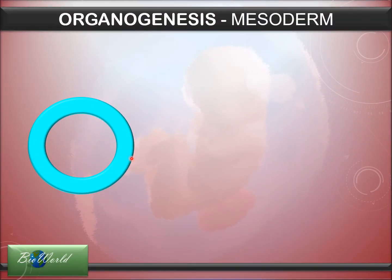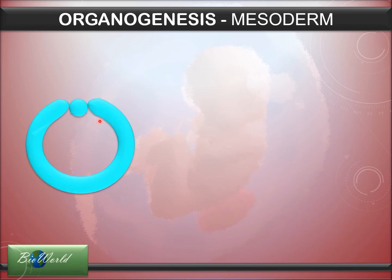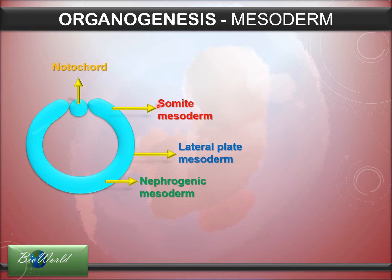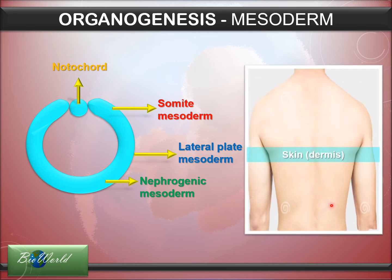The mesoderm is the middle layer of the gastrula, responsible for the development of the internal systems of our body. The mesoderm transforms into four specific regions: the notochord, somite mesoderm, lateral plate mesoderm, and nephrogenic mesoderm. Starting from the outside of the body — while the epidermis develops from the ectoderm, the inner layer of the skin called the dermis is developed from the lateral plate mesoderm.